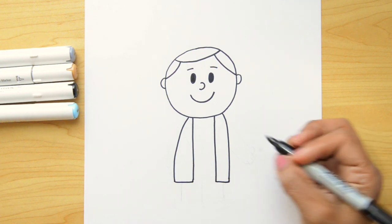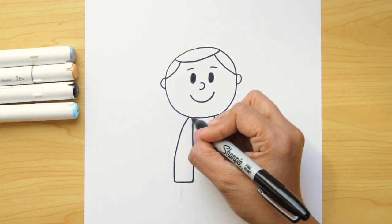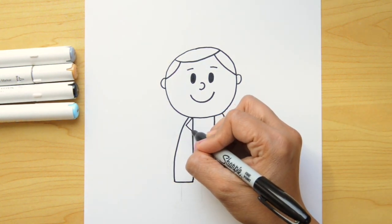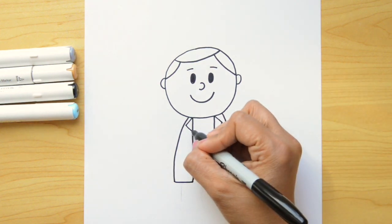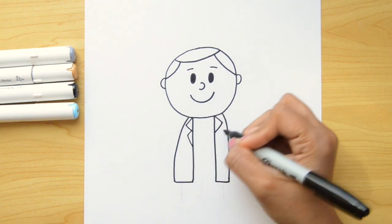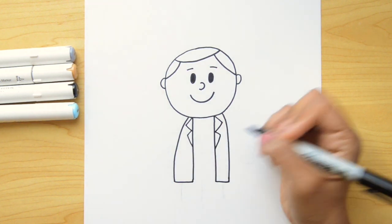Now let's draw the collar on his coat. We're gonna do a triangle that goes underneath his chin and another one on the other side. Now let's do a line that goes out and comes back and connects with the coat.